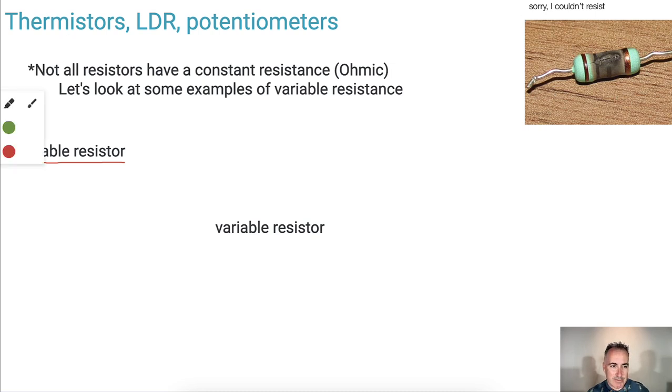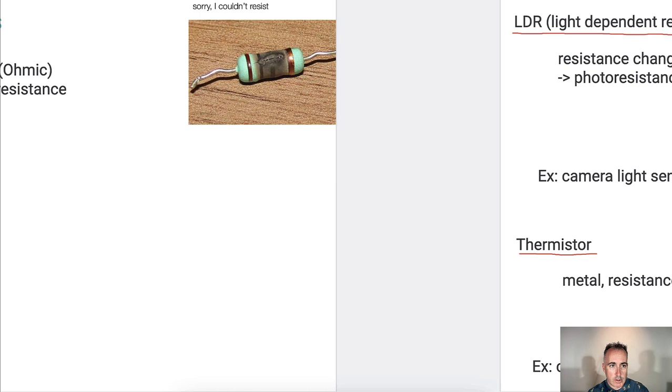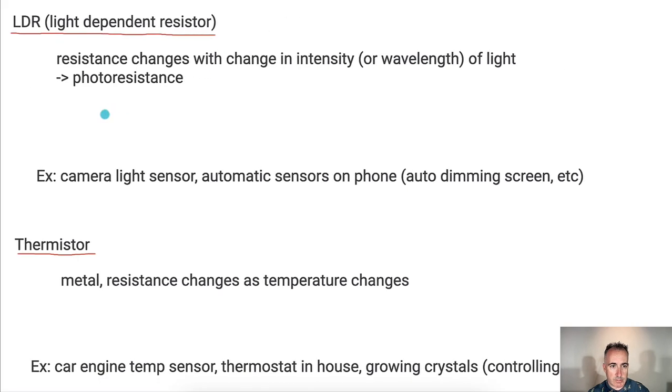Let's look at the symbol first for a variable resistor. All of these resistors we're going to discuss always have a little square like this and they're all going to have this little piece. They all will.